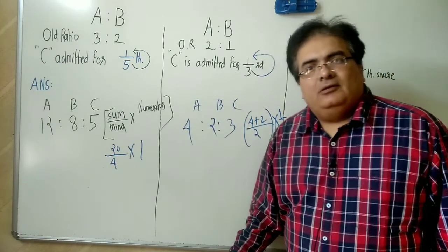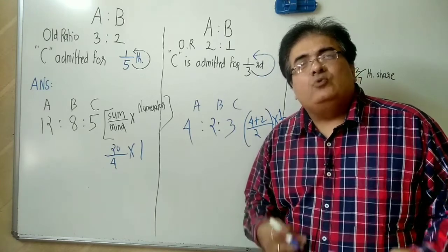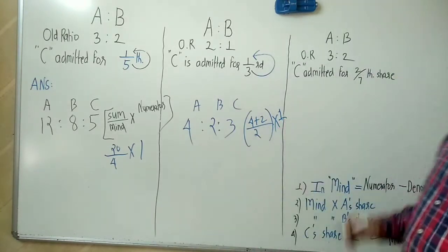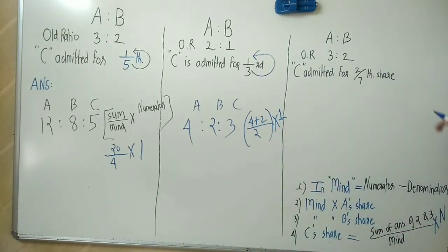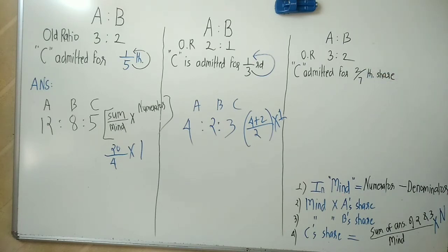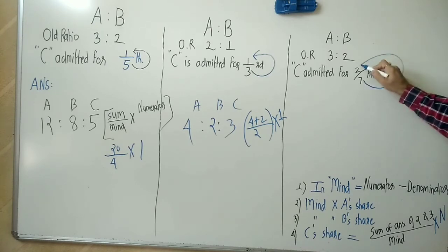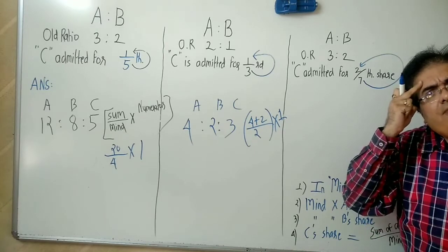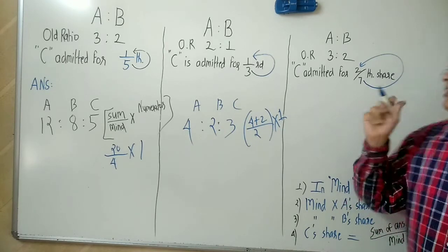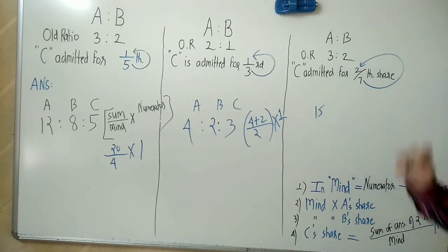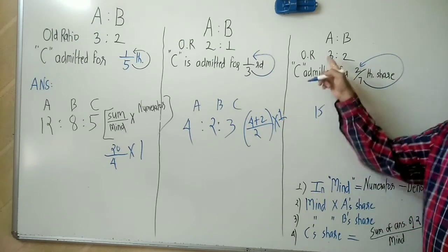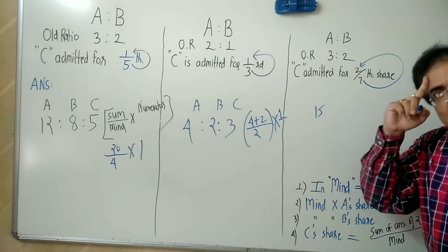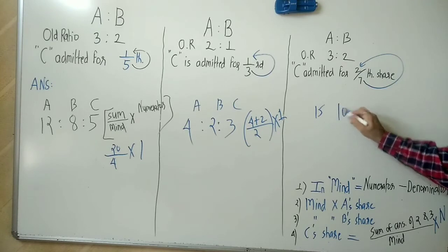Now C is admitted for 2 upon 7. Doesn't matter — method remains the same. Denominator minus numerator: 7 minus 2 = 5. Keep 5 in your mind. 5 × 3 = 15 (A's share). 5 × 2 = 10 (B's share).